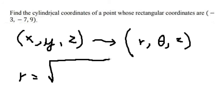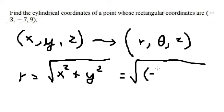x squared, that's negative three squared, and y, that's negative seven squared. We calculate this and get the square root of 58.